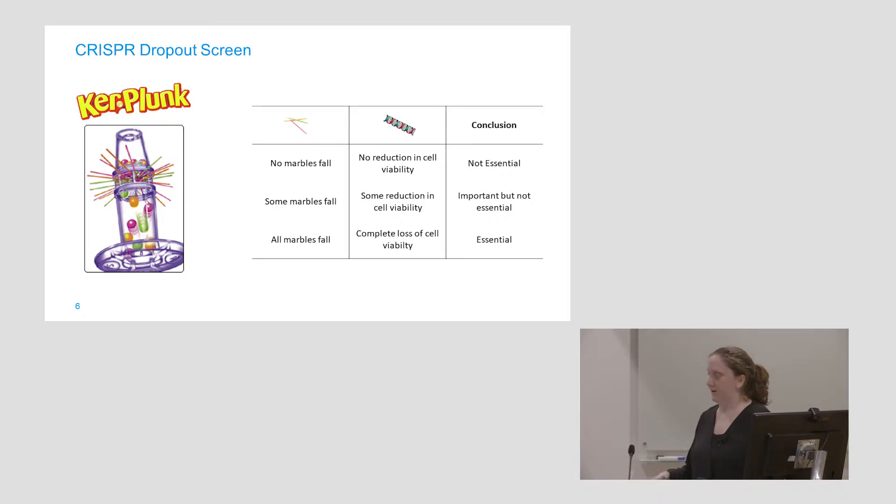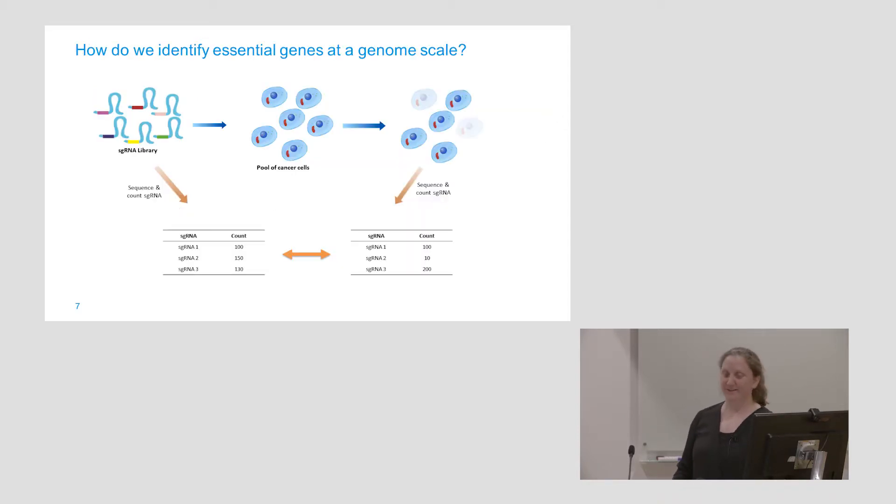As you saw in the last talk, Vincente's approach is gene by gene. You look at one gene, really delve deep into the mechanism of it. I work at Sanger and we like to do things big. Go big or go home. So we are doing this at a genome scale.